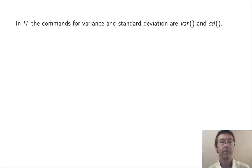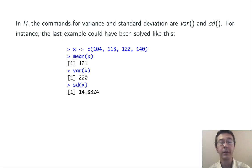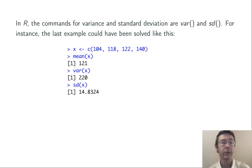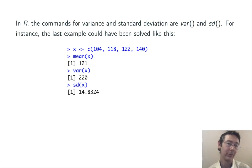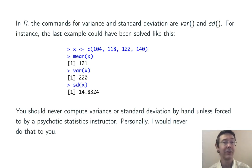A quick word on technology: using R, the commands for variance and standard deviation are var() and sd(). We could have done the last problem using these commands — first coding in the four values as a vector x, then asking R to compute the mean, variance, and standard deviation. It's a lot less work to do this using technology. My strong belief is that you should not be computing variance and standard deviation by hand in this day and age; personally, as a professor, I do not ask my students to do this.